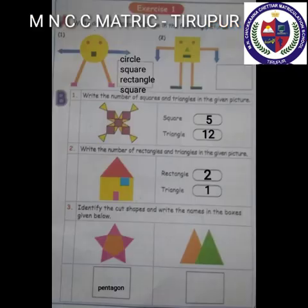Exercise 1: Write down the names of the shapes in the following pictures. See the first picture — what shapes are present here? There are circles, square, triangle, and rectangle.